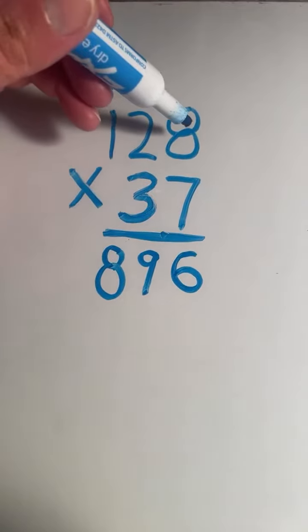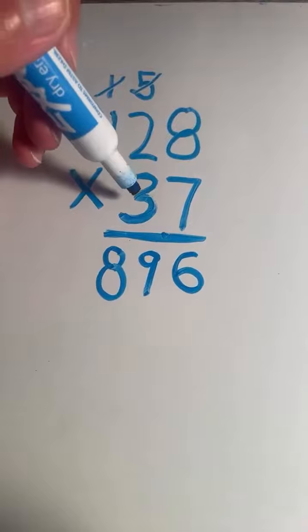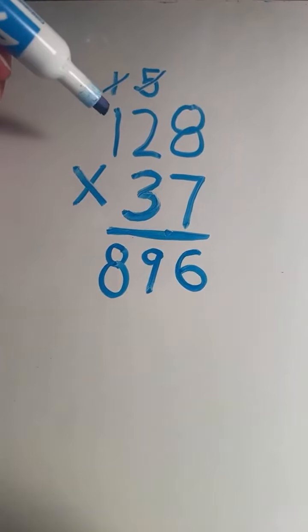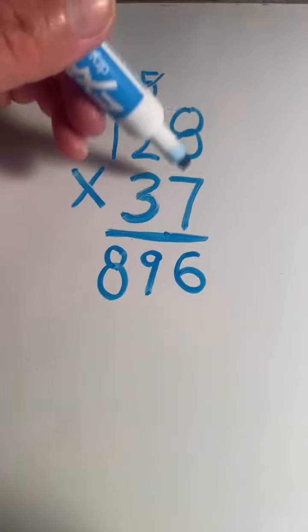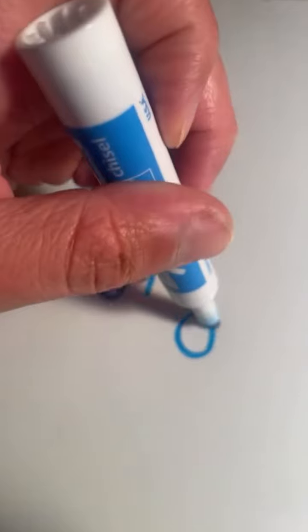Next we've got to multiply the top three digits times the bottom digit in the tens place. Since we already multiplied both digits in the ones place, we're going to put a 0 in the ones place.